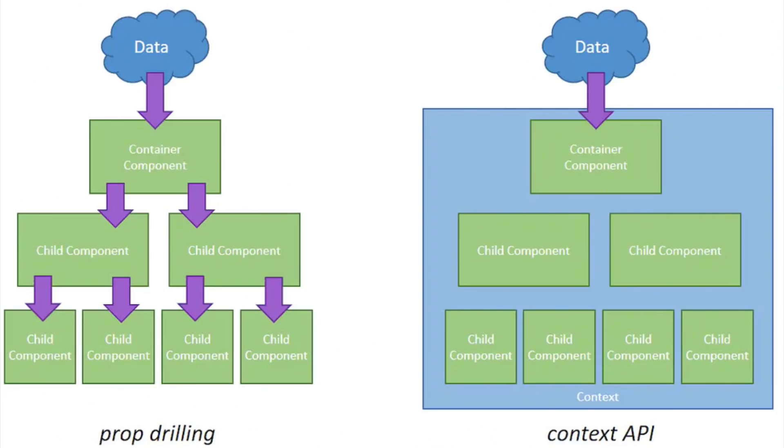Another big shift in the React state management history was React context. With React 16.3, we had a first-class solution to share logic across multiple different components. This prevents passing values down from component to component to component, which some people refer to as prop drilling. React context in and of itself is not a state management solution. When you pair it with hooks like useState and useReducer, then it becomes a full state management solution. Really, React context is just the means to transport your data between lots of different components.